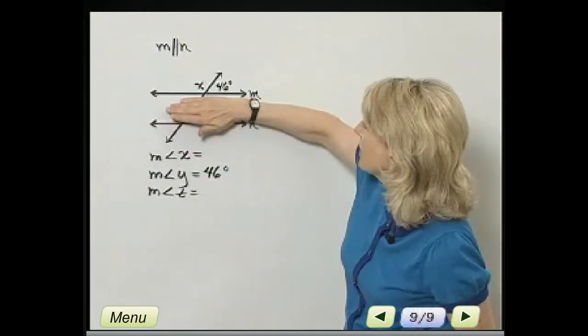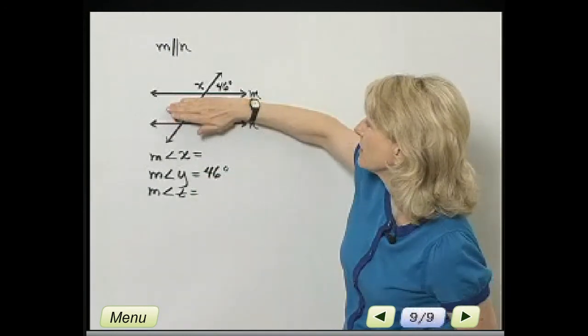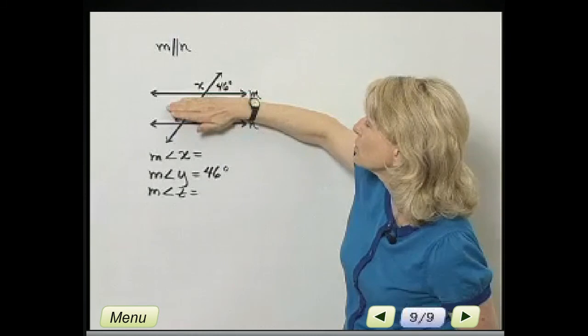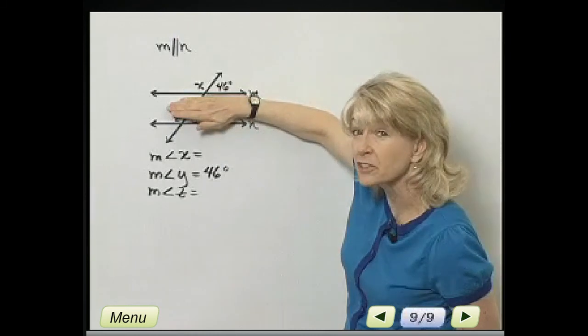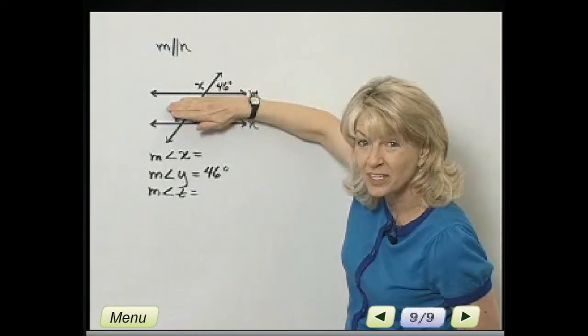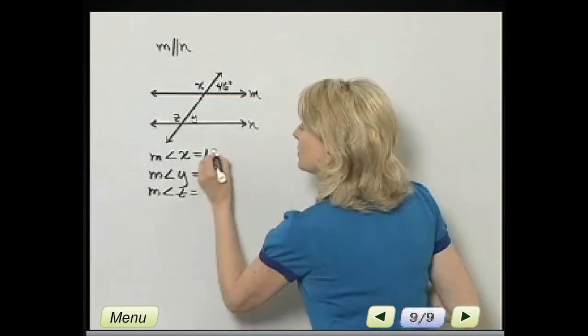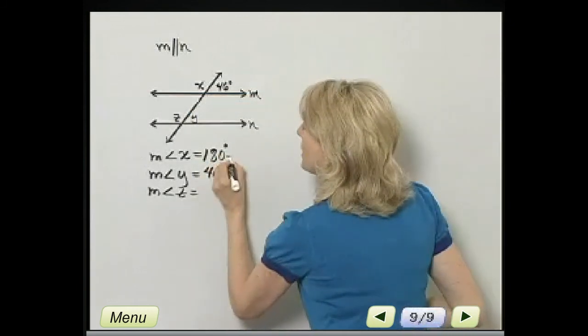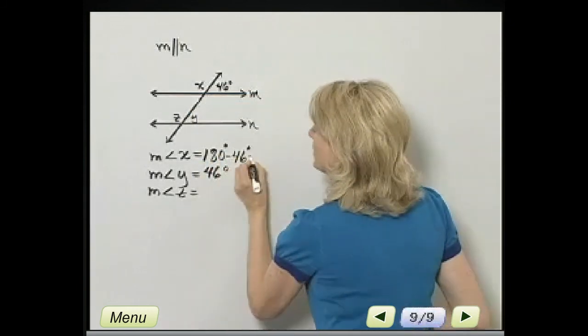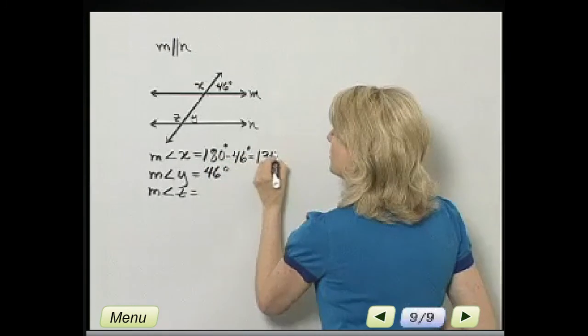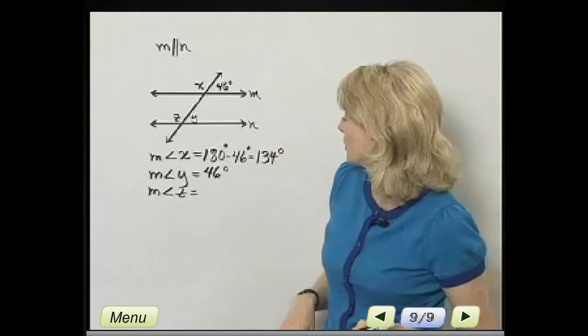What about X and 46 degrees? Those two angles form a straight angle whose measure is 180 degrees. So the measure of angle X is 180 degrees minus 46 degrees, and that is 134 degrees.